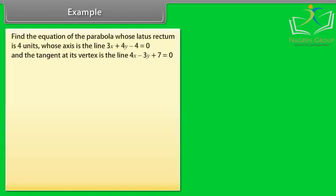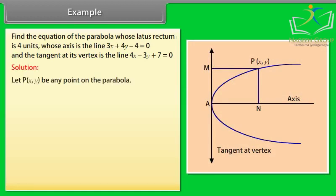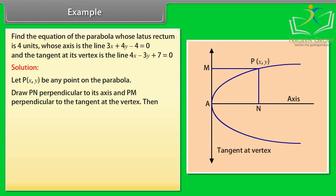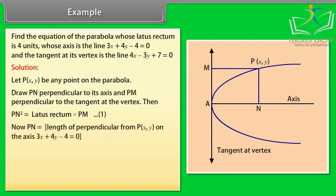Example: Find the equation of the parabola whose latus rectum is 4 units, whose axis is the line 3x + 4y − 4 = 0, and the tangent at its vertex is the line 4x − 3y + 7 = 0. Solution: Let P(x, y) be any point on the parabola. Draw PN perpendicular to its axis and PM perpendicular to the tangent at the vertex. Then PN² = latus rectum × PM (equation 1). Now PN = the length of the perpendicular from P(x, y) on the axis 3x + 4y − 4 = 0, which equals (3x + 4y − 4) / √(9 + 16) = (3x + 4y − 4) / 5.